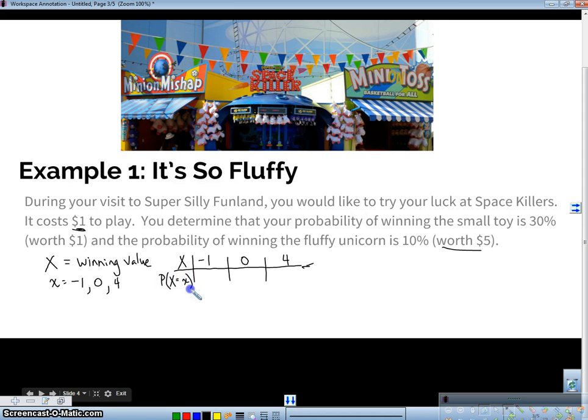So the probability that I get negative one is, well, if the probability that I win a small toy is 30%, so I'm going to put 30% here, 0.30. And the probability that I win the fluffy unicorn is 10%, so 0.10. These probabilities must add to 1. So these all must add to 1. And if they don't, for some reason, you might need to do a little estimation to make sure they do. Well, this one's easy. This is going to be 0.60. Okay, so these all add to 1. And this right here is our probability model for a discrete random variable in this case.